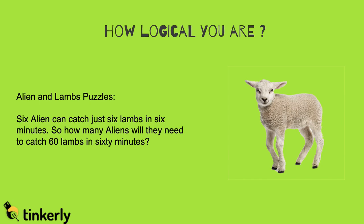Most commonly I have received answers of 60, 10, or 6. The correct answer is 6. Why? Because 6 aliens together can catch 1 lamp per minute, so 6 aliens can catch 60 lamps in 60 minutes. The answer is 6. These are the basic logic questions that will be part of the complete course.